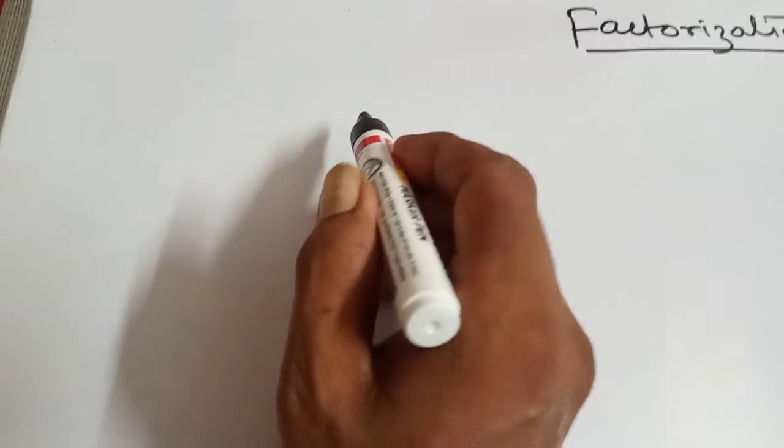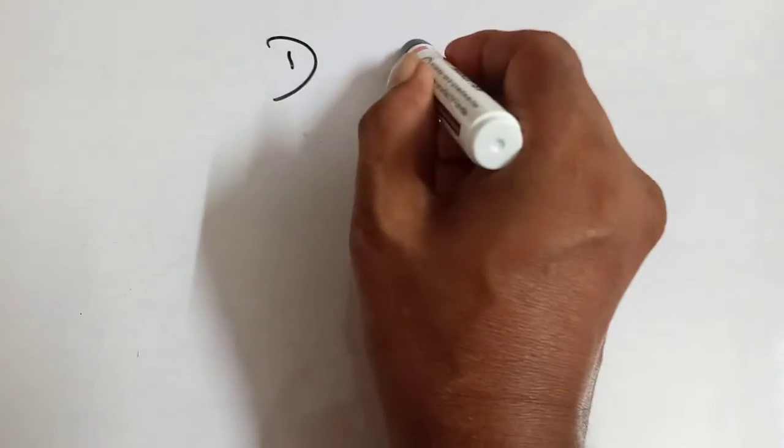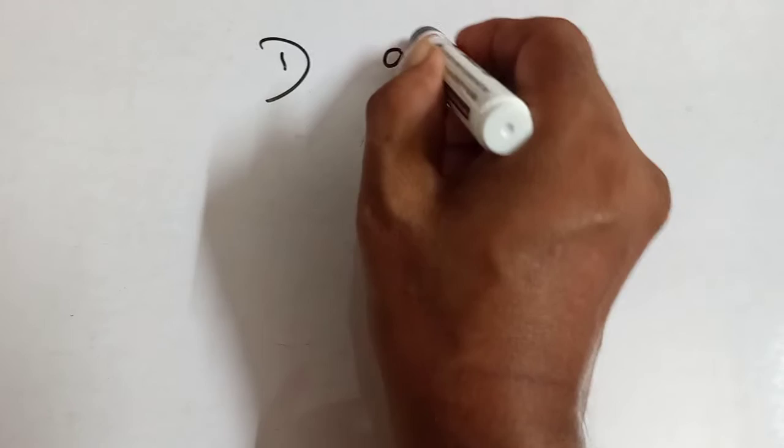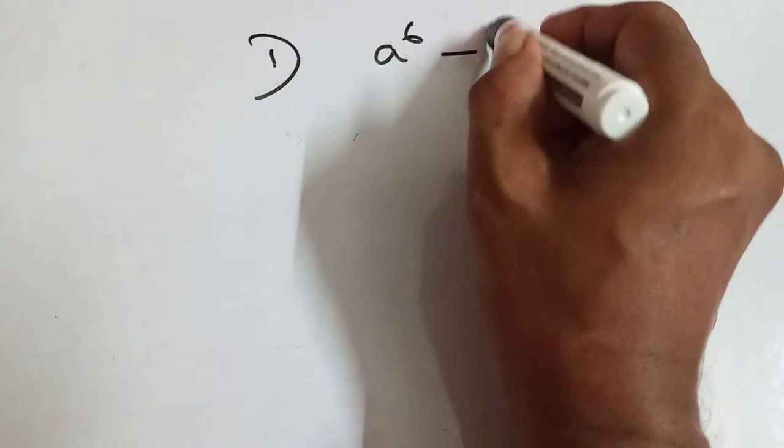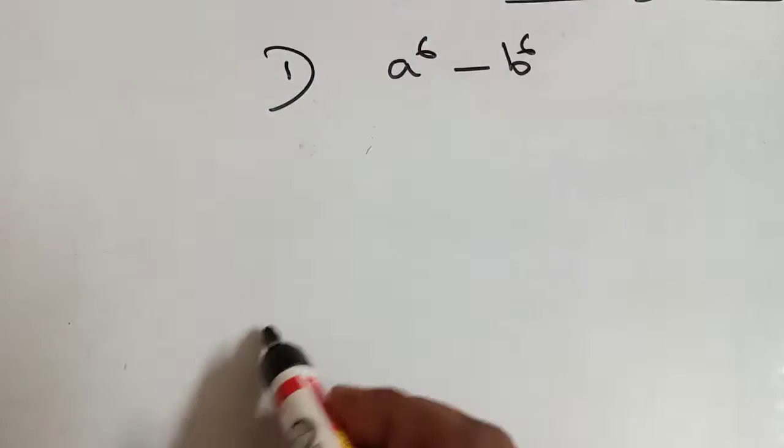Factorization. We will factorize A to the power 6 minus B to the power 6.